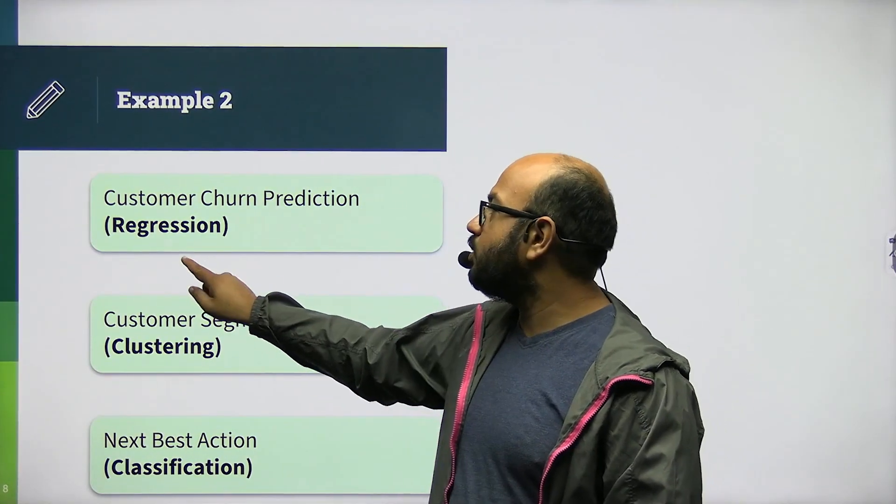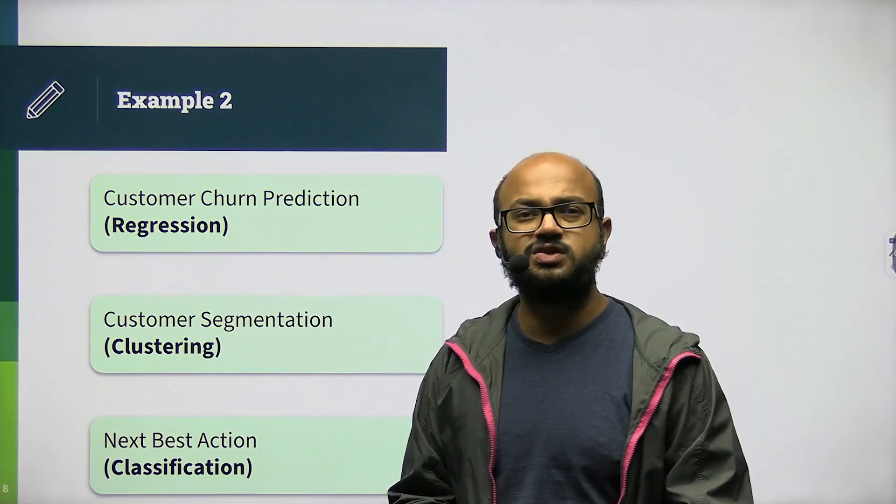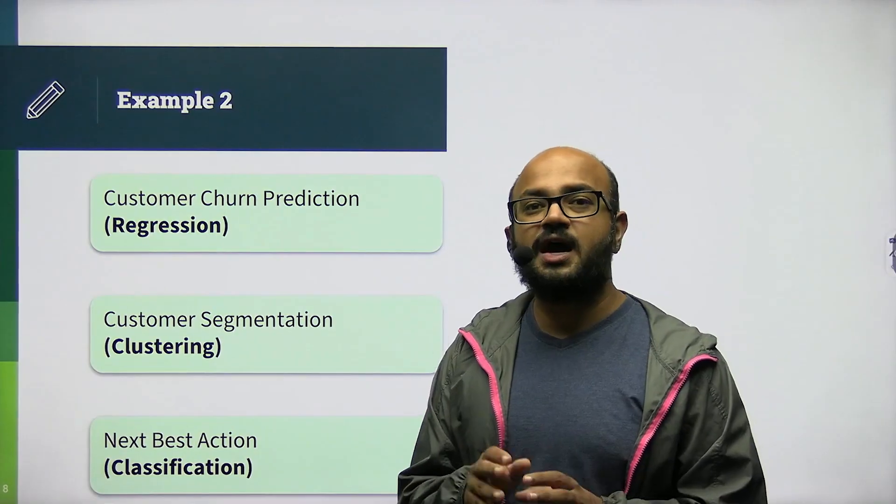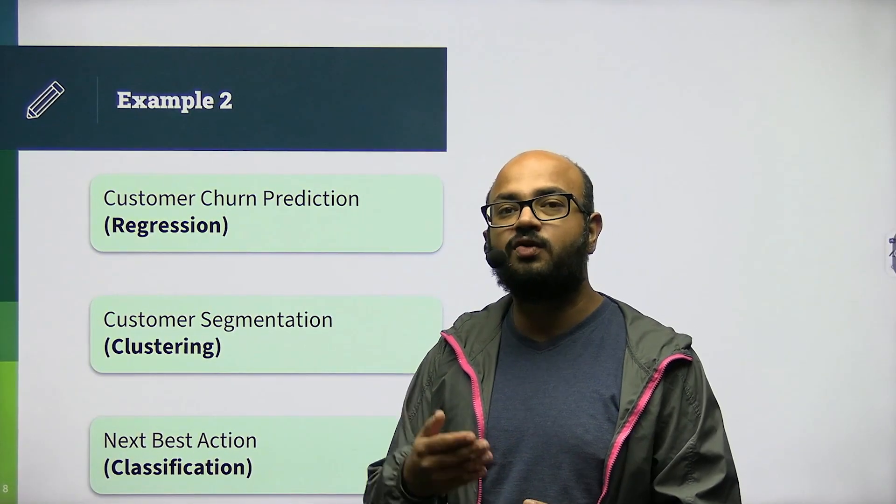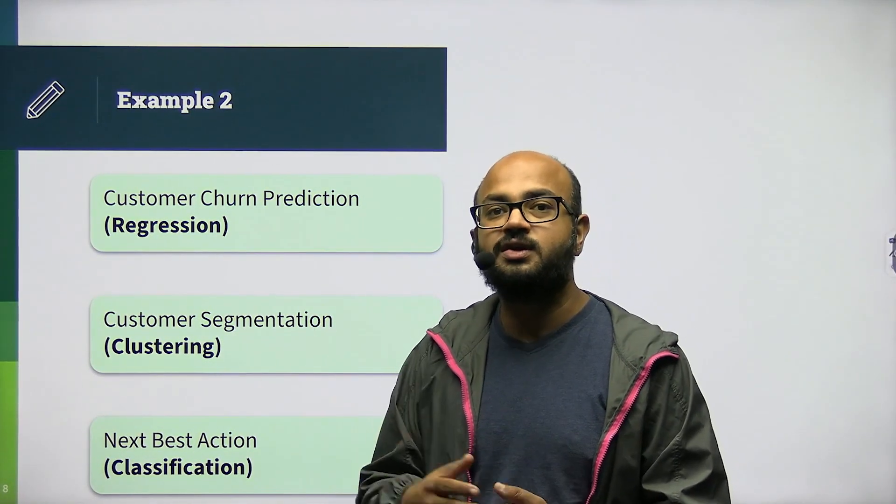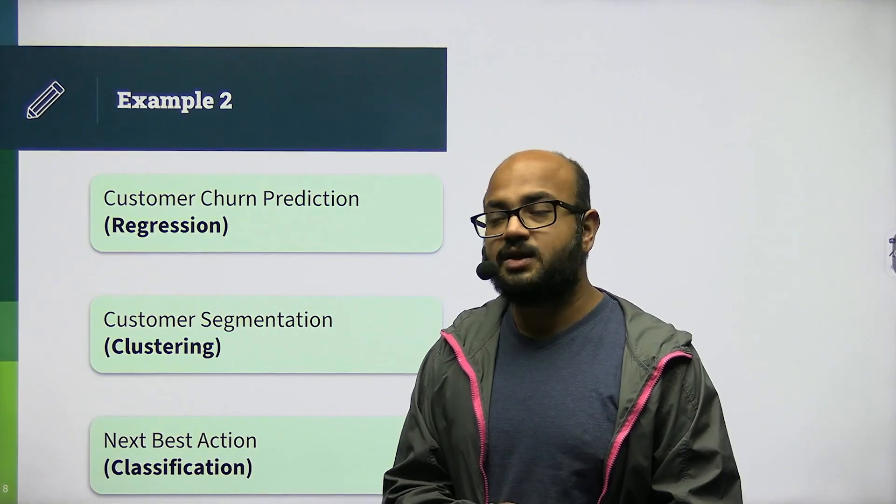So, I'll convert that business problem statement into three separate technical problem statements. The first one is going to be customer churn prediction, which is clearly a regression. I have to predict the probability of each customer leaving the subscription service.